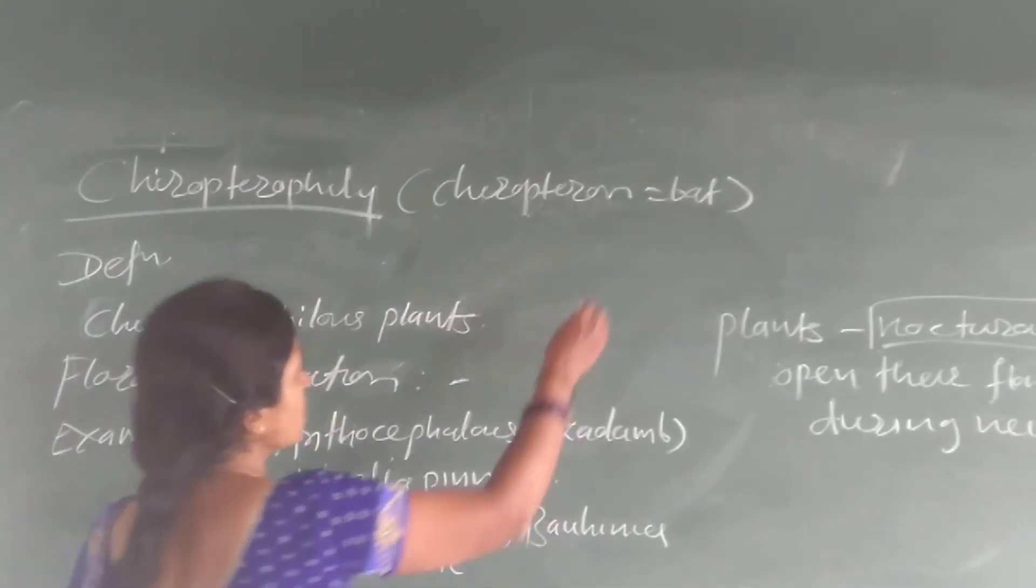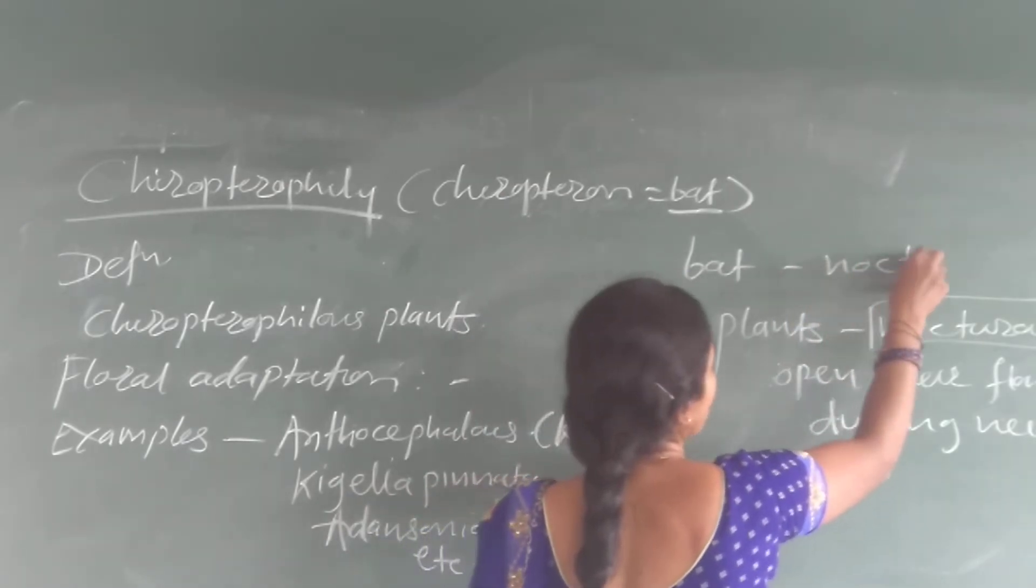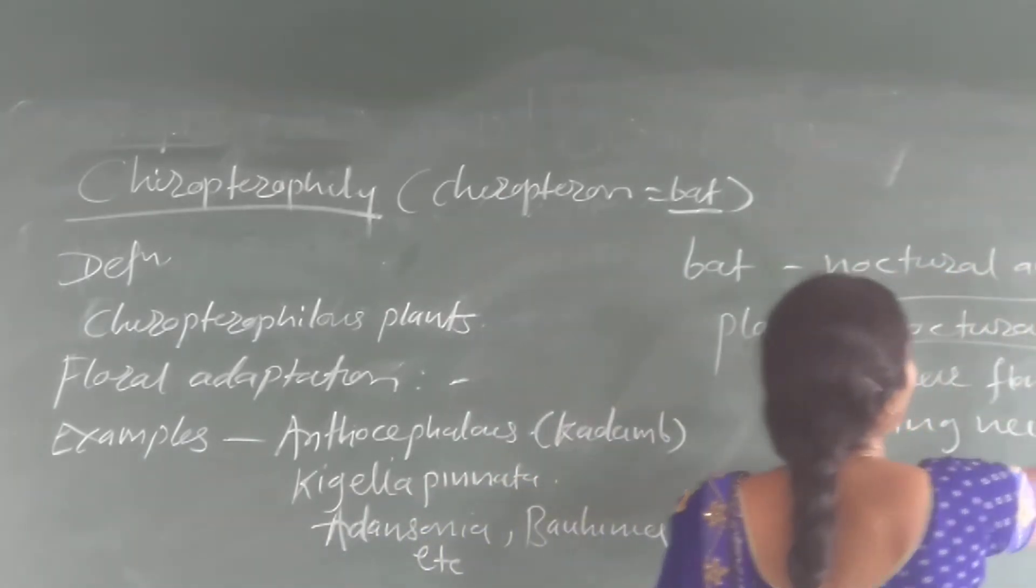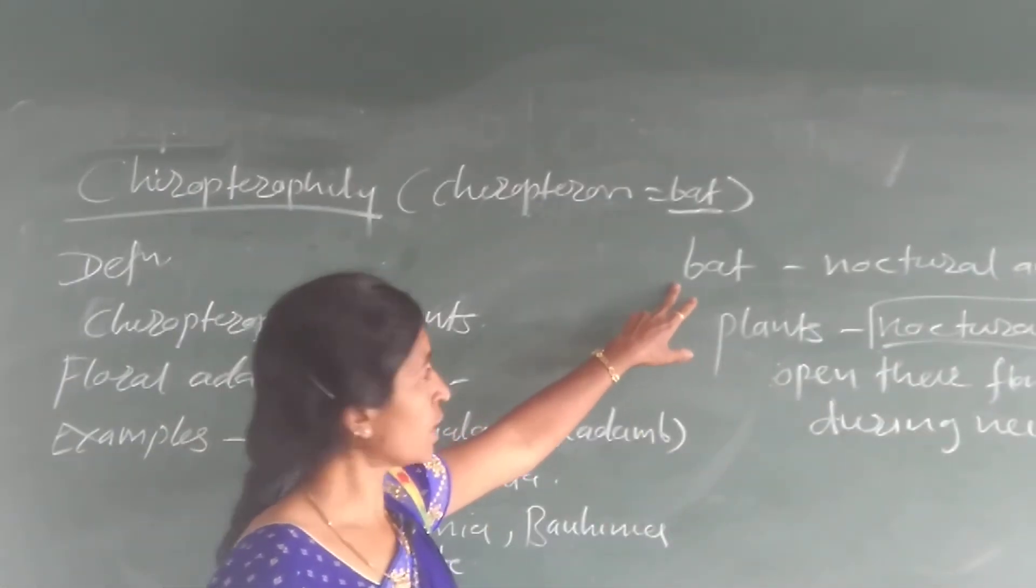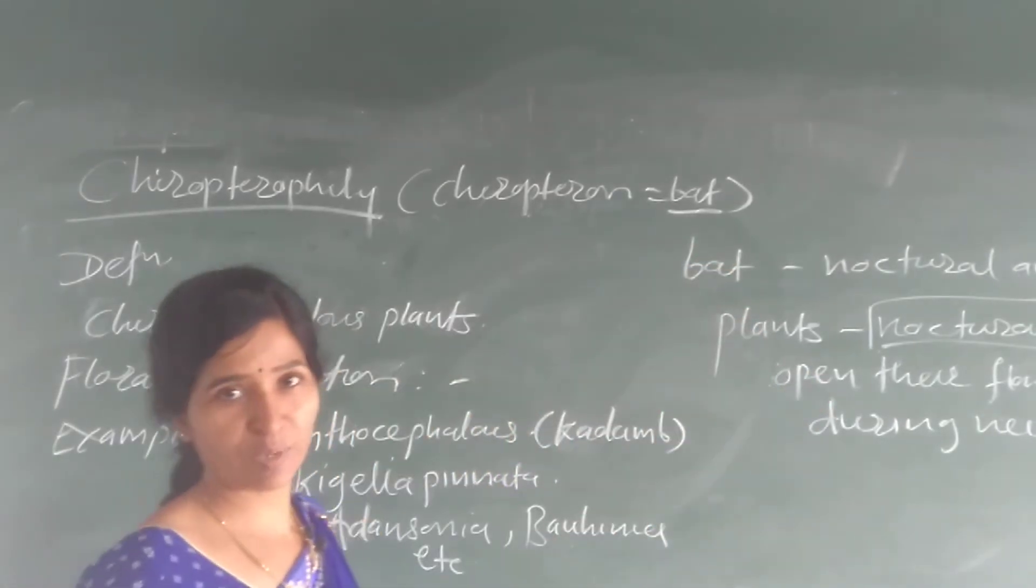The bat is also nocturnal. Bat is a nocturnal animal that comes out during the night. So the bat is nocturnal, these plants are nocturnal, and thus pollination takes place.